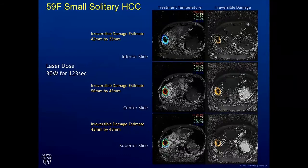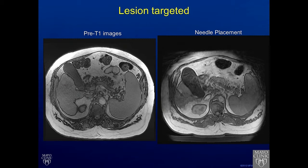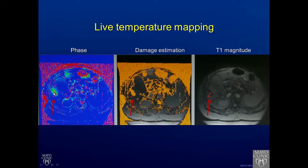We also have microwave ablation, which we can utilize in the liver. Microwave uses very similar technology to the laser as far as monitoring. Here we have a microwave needle through a visualized tumor in the liver, and then we can monitor with temperature mapping, just like we did with the laser, to see that we have killed the tumor in the liver and that we are pleased with the result.